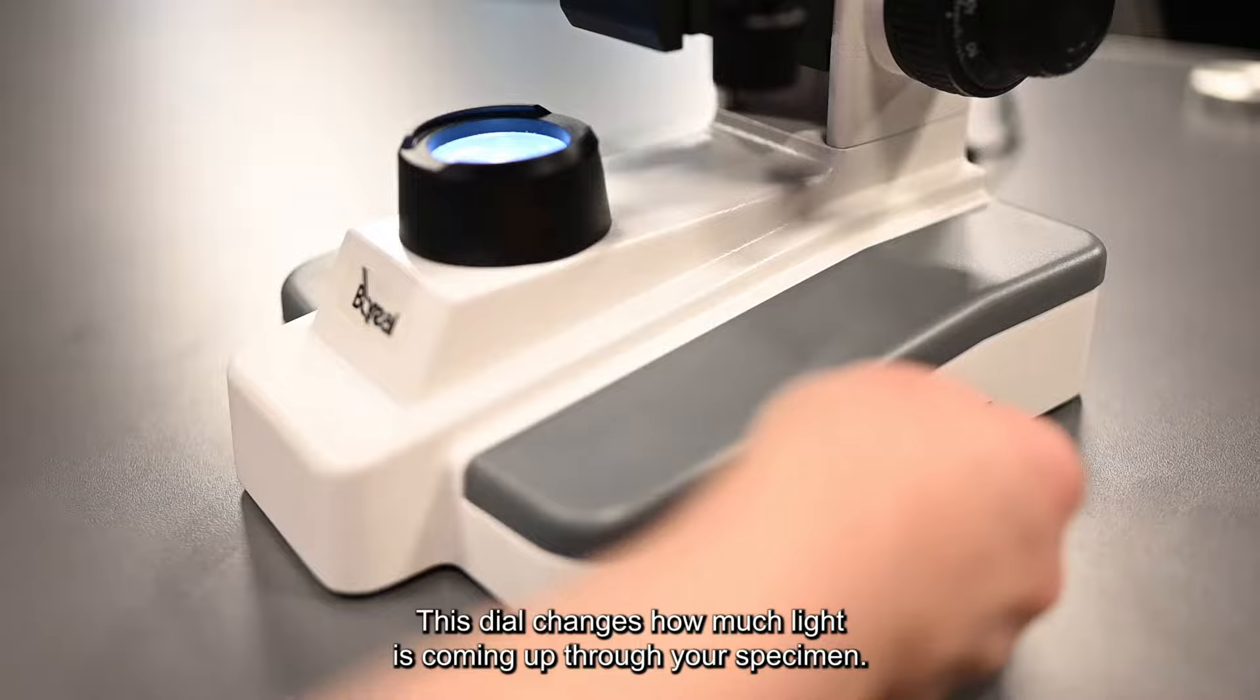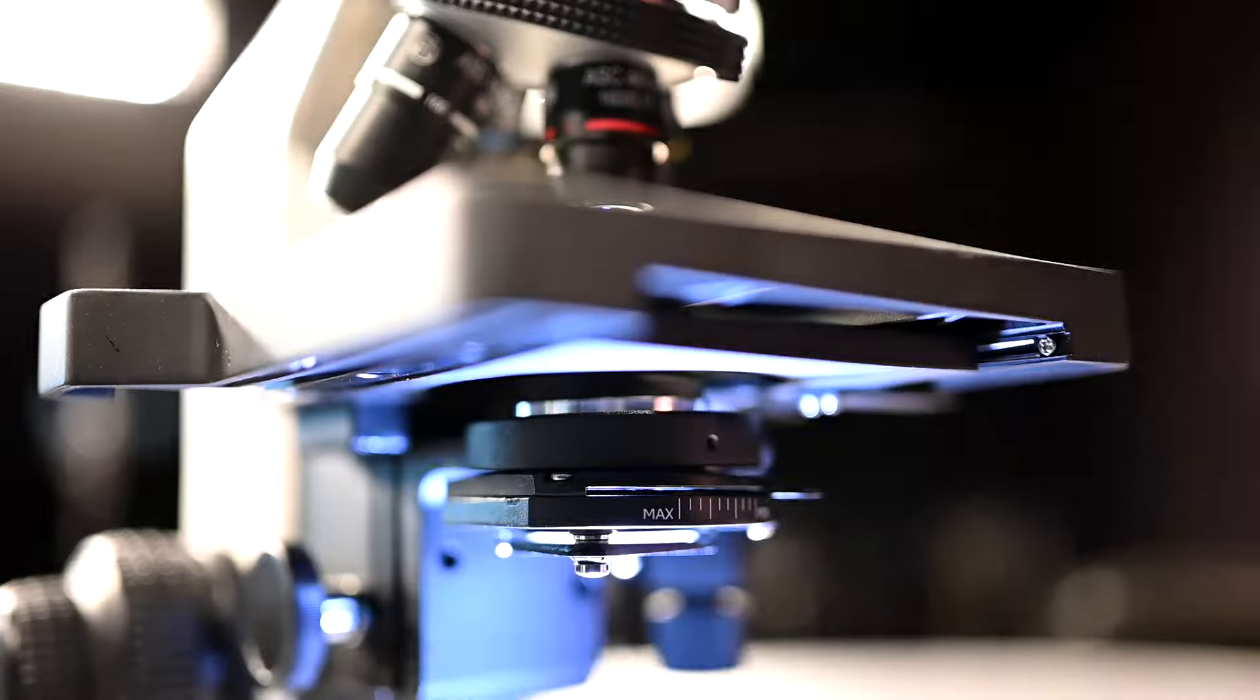On the side of your microscope you'll notice a dial. This dial changes how much light is coming up through your specimen. You always want to make sure that you have light coming up through your specimen.